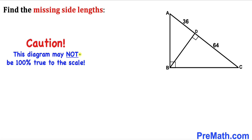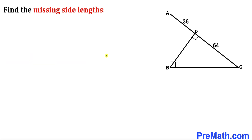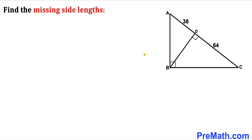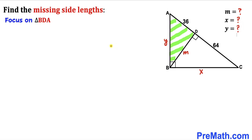Please keep in mind that this figure may not be 100% true to scale. Let's get started with the solution. I'm going to label the unknown sides: BC as X, AB as Y, and BD as lowercase M. Our task is to find the values of M, X, and Y.